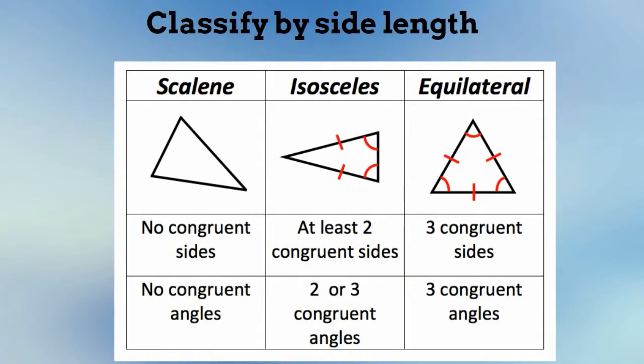Triangles can also be classified according to side length. A scalene triangle has no congruent sides. An isosceles has at least two congruent sides. And an equilateral has three congruent sides.